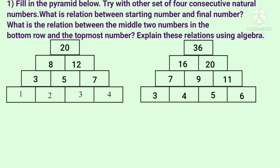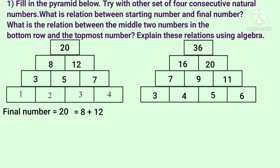Now we have the starting number and final number. Now we have the same variable here. The final number is 36. As we call the number, 4 times 2 equals 4 times 2, which is doubled by 4 times 3. This becomes 4 into 2 plus 3. Let's take a look at the final number and starting number relation.